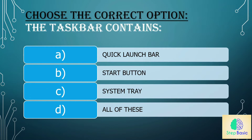Question 3: The taskbar contains: a) quick launch bar, b) start button, c) system tray, or d) all of these. The answer is d) all of these.